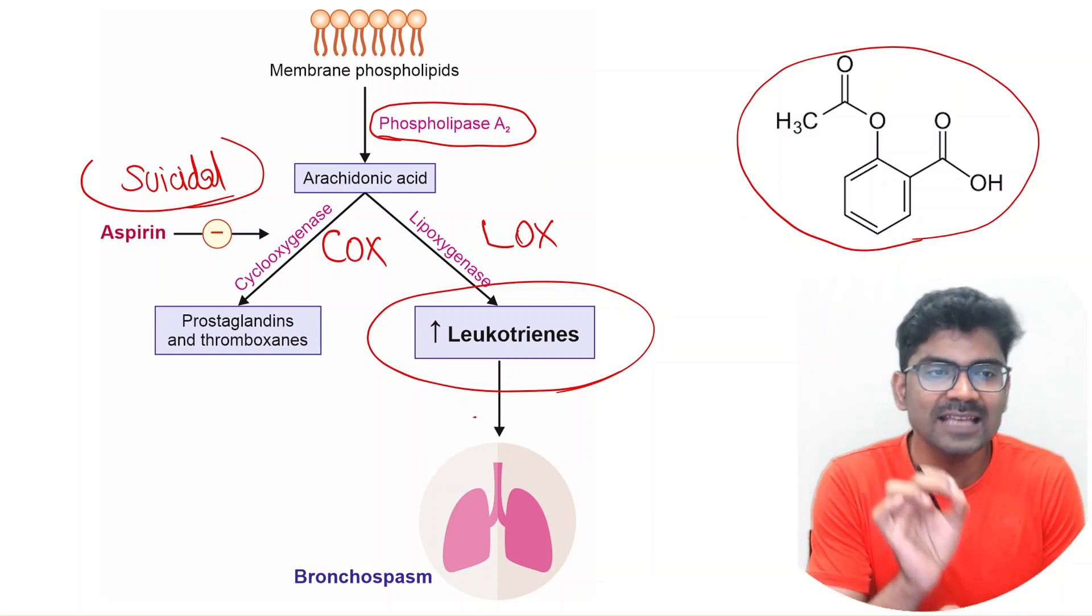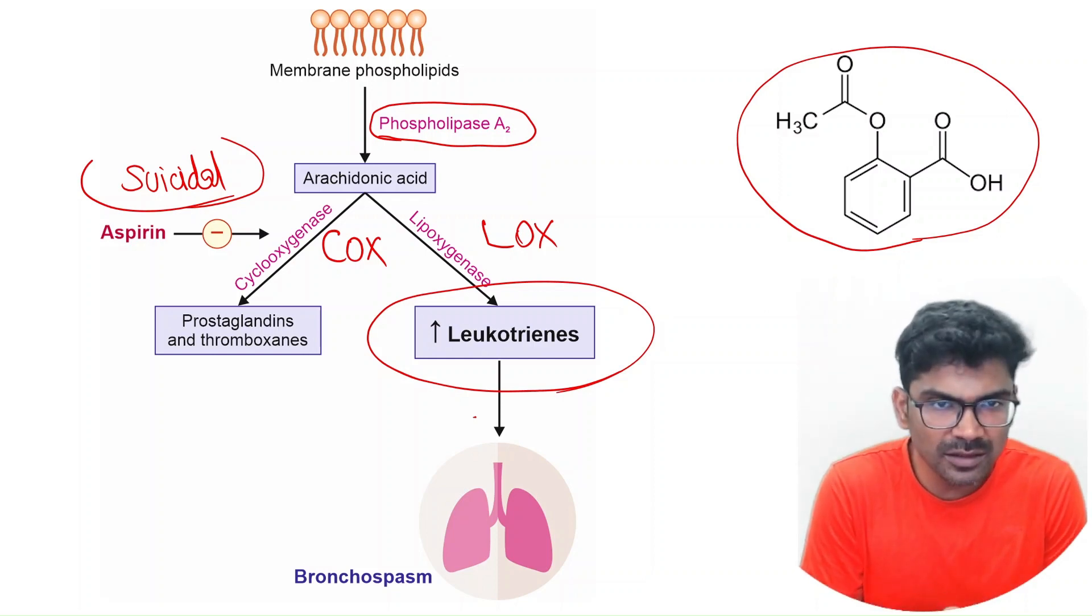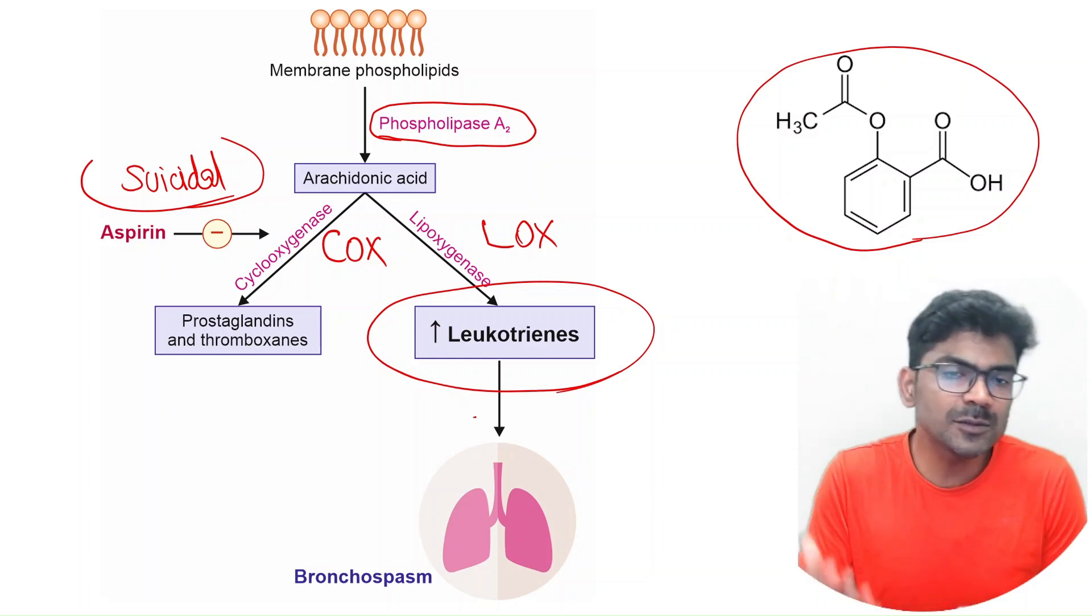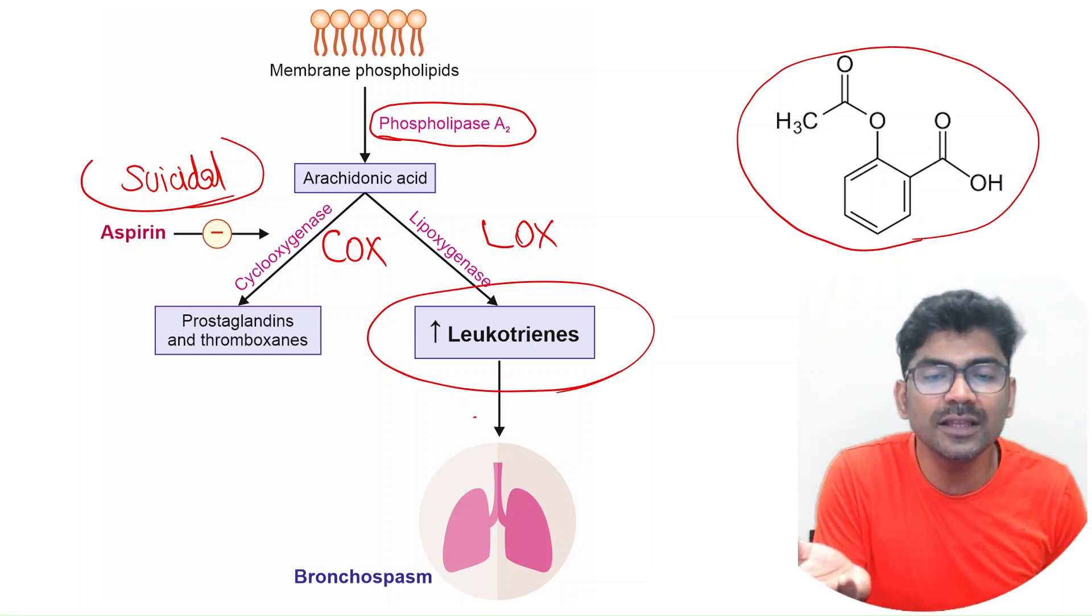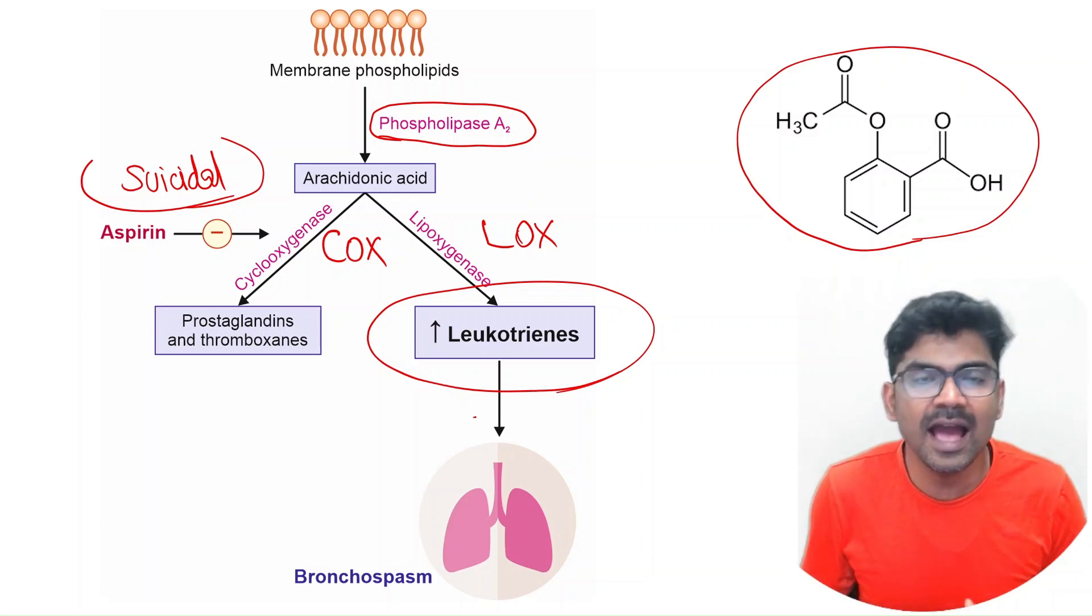Aspirin inhibits COX pathway and LOX pathway operates unopposedly, and there is increased production of leukotrienes, which is the reason for aspirin-induced bronchospasm.